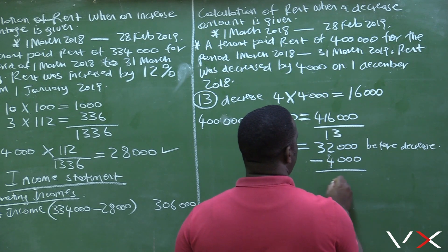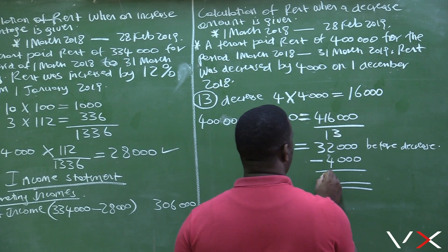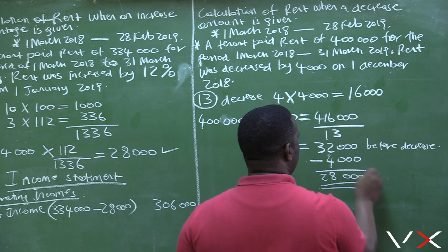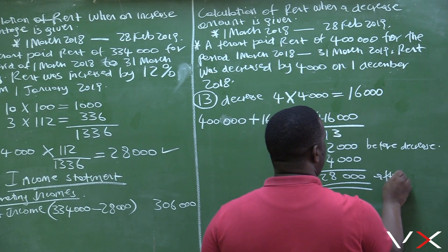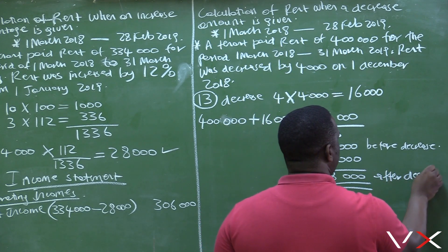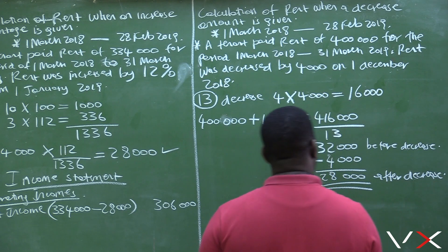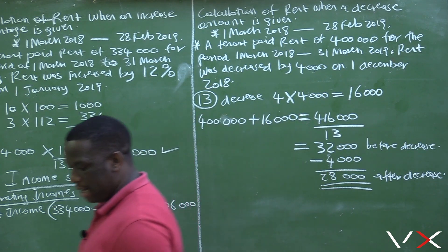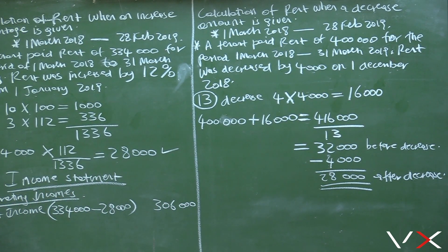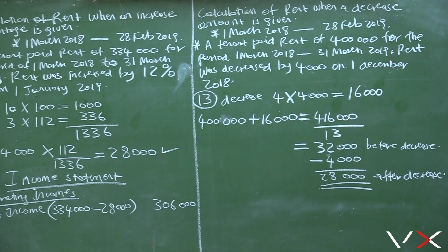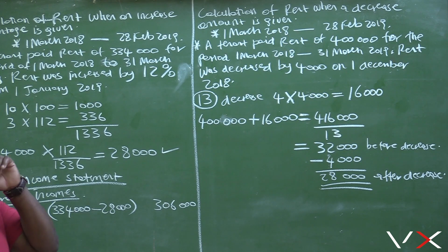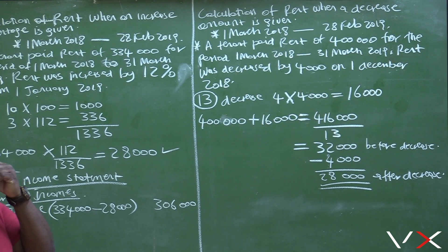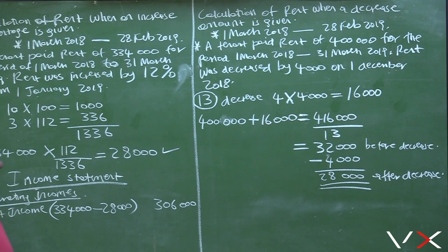So thirty two thousand minus four thousand means rent after decrease is now twenty eight thousand per month. We now know the rent per month: rent before decrease was thirty two thousand, it went down by four thousand, and now rent is twenty eight thousand per month.